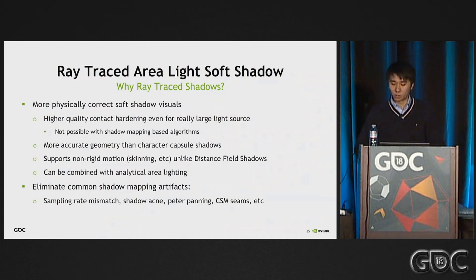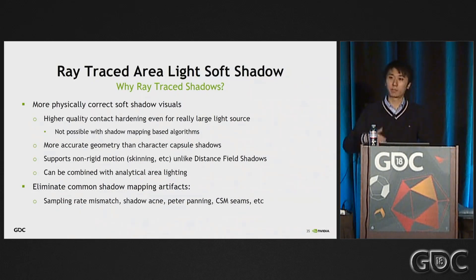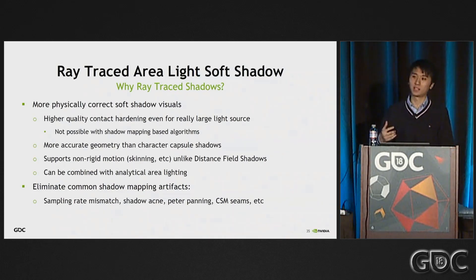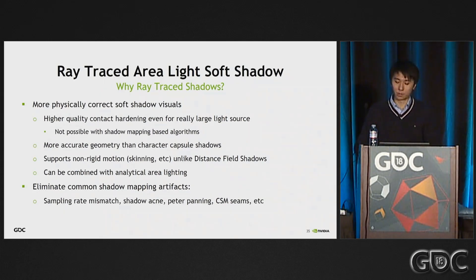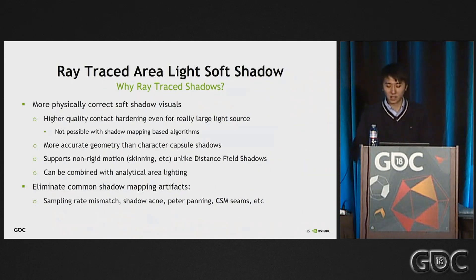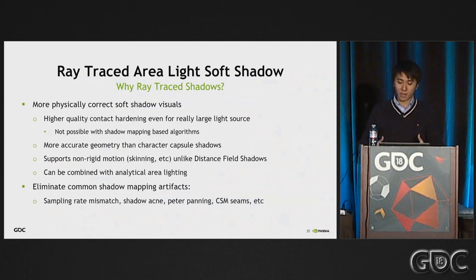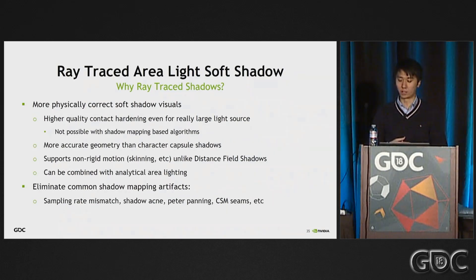Another common solution is capsule shadows, which is pretty common for character shadows. But comparing with that, we're actually tracing rays against the actual geometry, so we should have much finer geometry details than capsule shadows. We also support much more geometrically complicated occluders, and unlike distance field shadows, we support occluders with skinned rigid body motion. And with analytical area light shading being so popular nowadays, ray traced area light shadows can definitely be combined with those techniques to achieve really high quality area light shading in games.